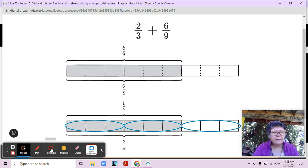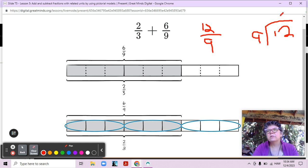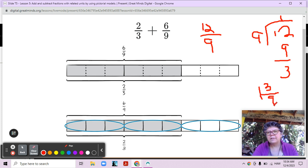But twelve-ninths is an improper fraction. So we might want to take it from twelve-ninths, twelve divided by nine. One, one times nine is nine, with three left over. So that would be one and three-ninths, right? Written as a mixed number, because two-thirds is the same as six-ninths. Okay?